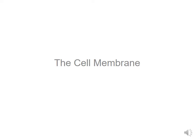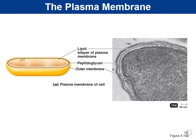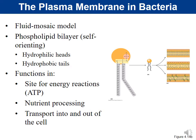Now we're going to move from the cell wall inward and talk about the cell membrane. For gram-negative bacteria, they have the outer membrane, peptidoglycan, and then we come inside to the cell membrane.